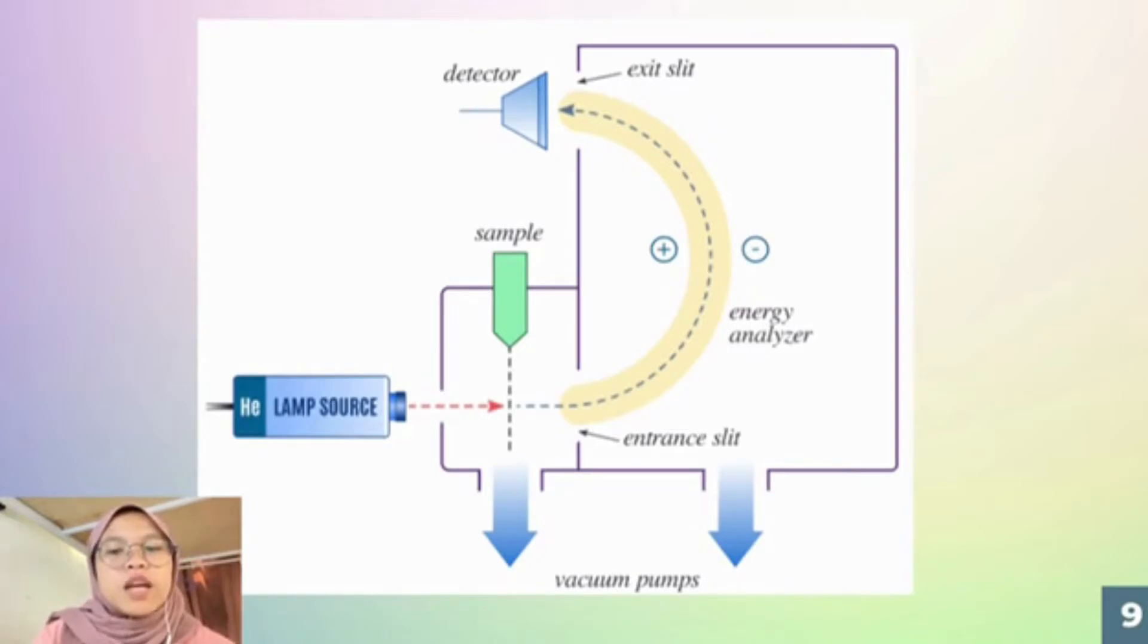Modern UPS instruments are capable of studying solids. The photoelectrons produced are passed through a slit into a vacuum region where they are then deflected by magnetic or electrostatic fields to give an energy spectrum.